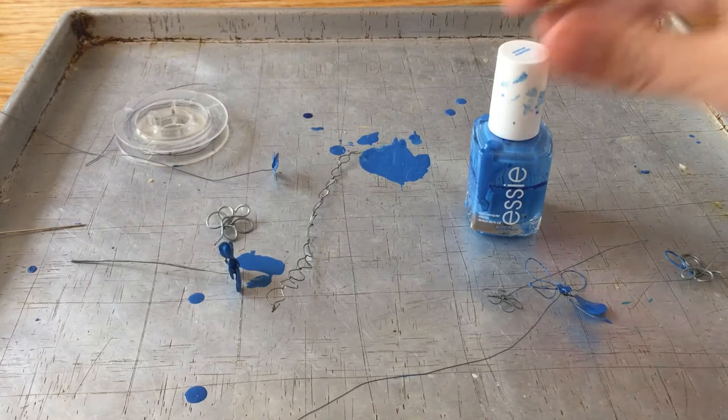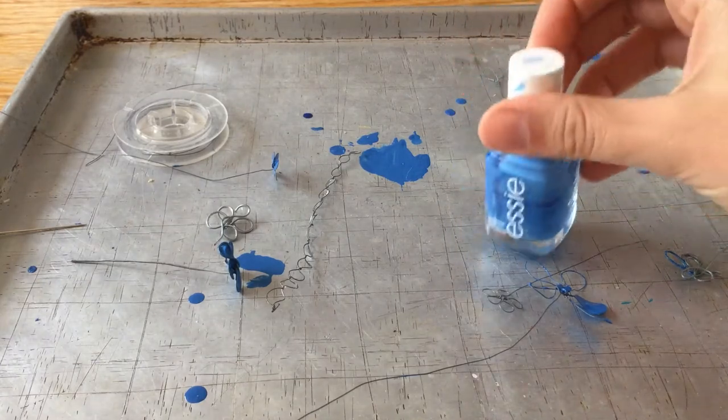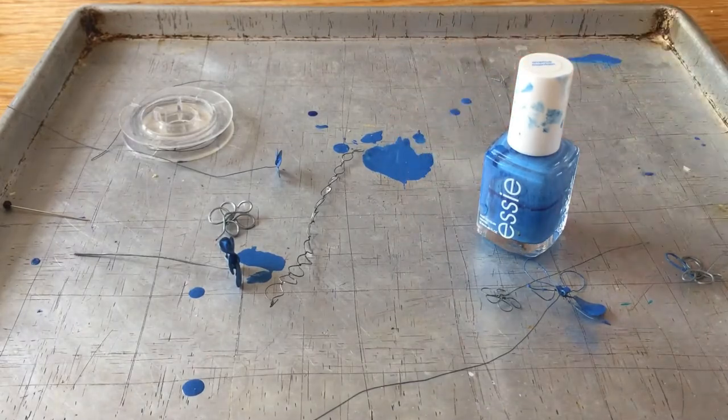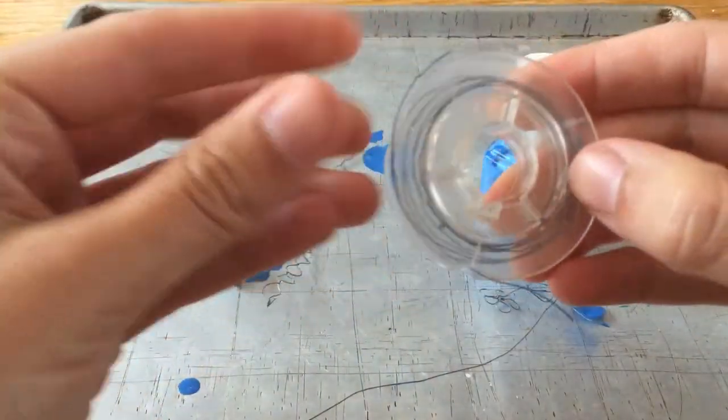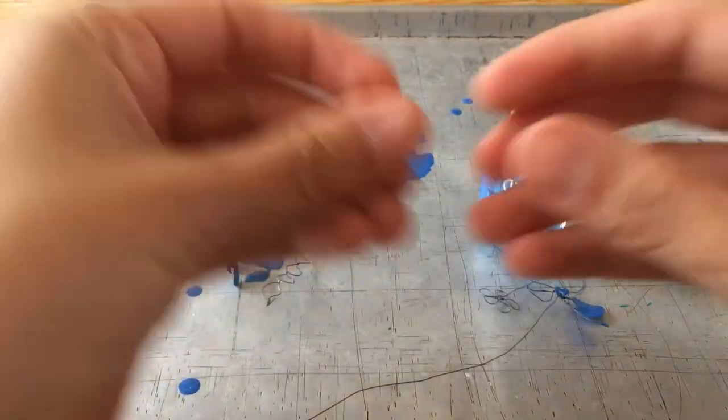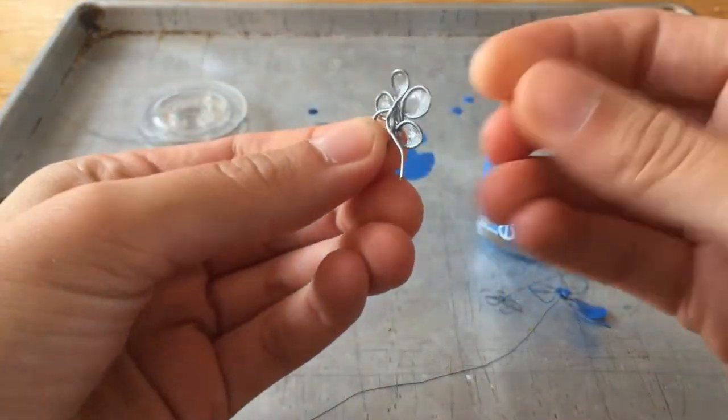All you need is nail polish and some kind of surface that you don't mind getting a little bit messy, and some wire. You can use fuse wire or something a little bit thicker, as long as it's really easy for you to bend.